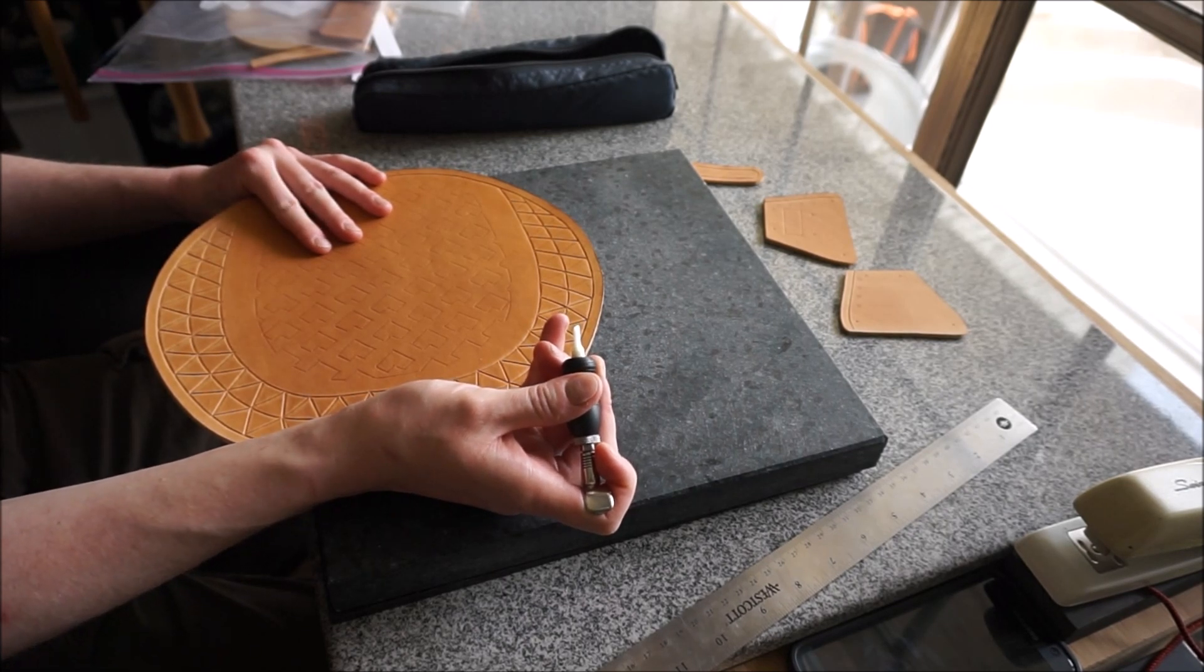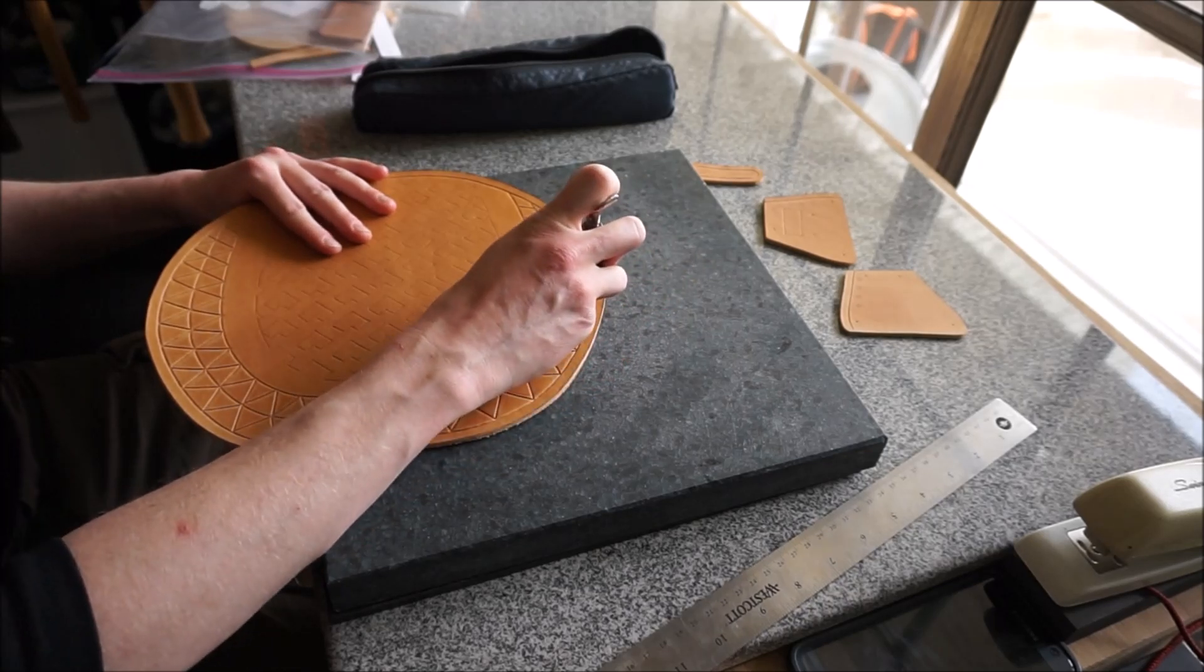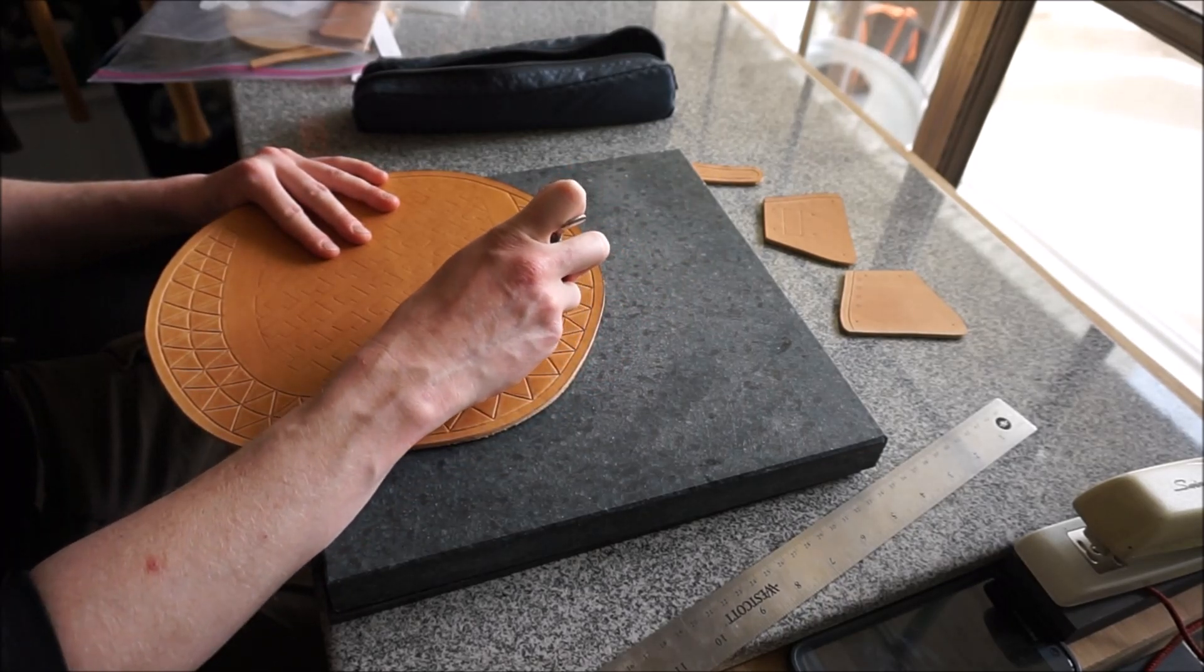See what this swivel knife is actually doing, because this is a relatively thick blade. It's about a sixteenth of an inch thick. You are not just slicing through the leather, you are slicing open the leather. You are creating these little channels here, these little v-shaped valleys that your stamps will then follow.